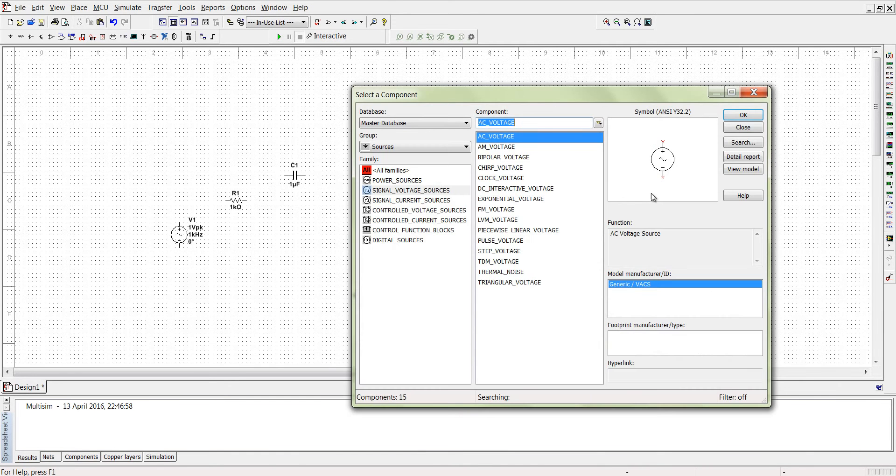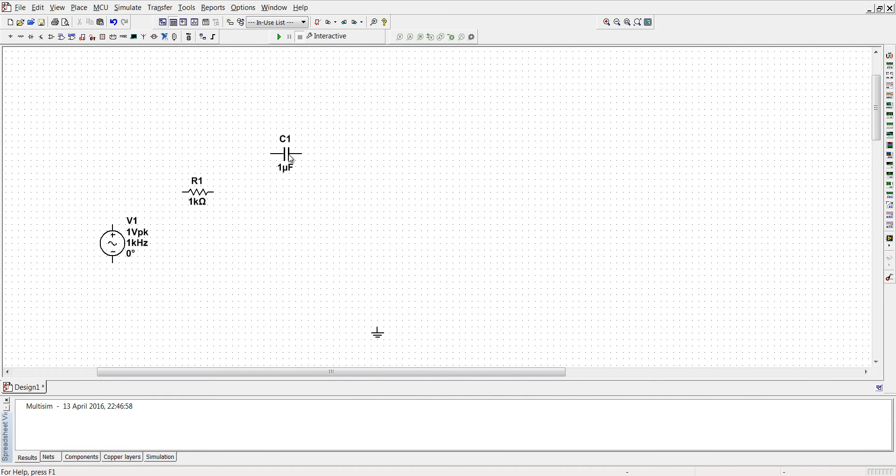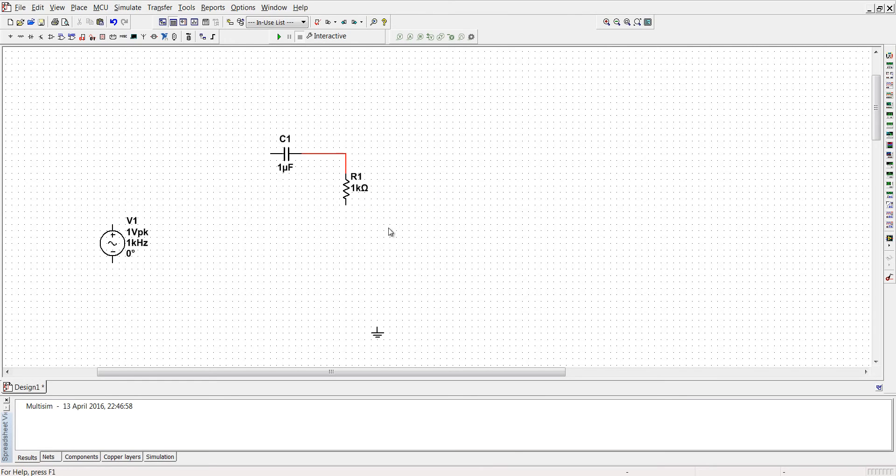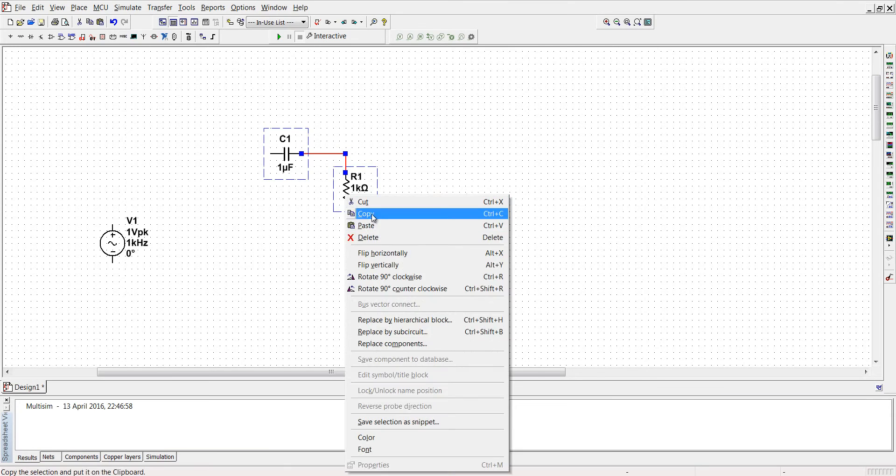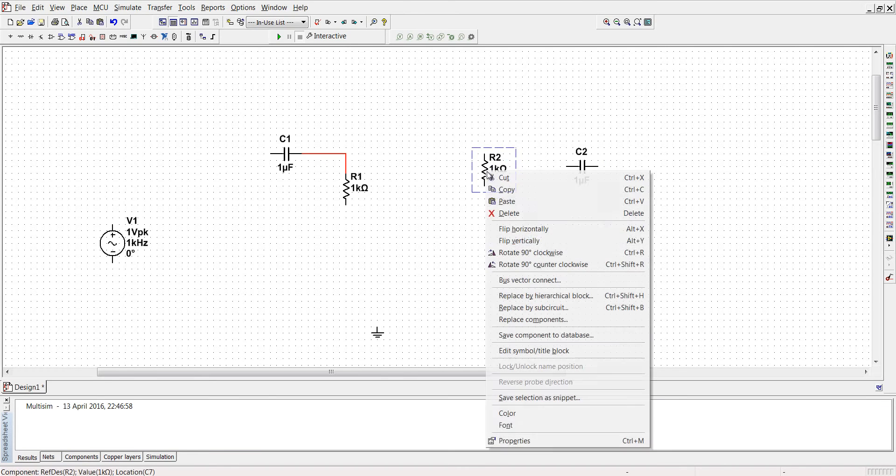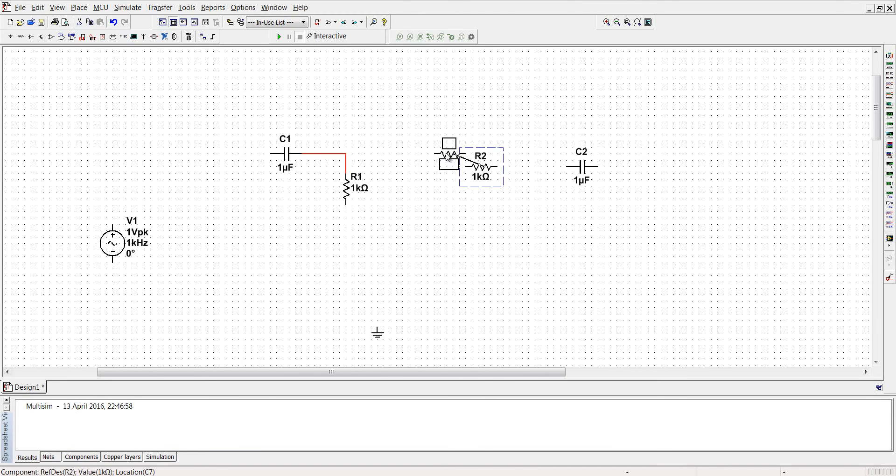First design the high pass filter. Rotate it and connect these two filters together. Then copy it, paste it here, and rotate it by 90 degrees. Connect R2 and connect C1 with the source.